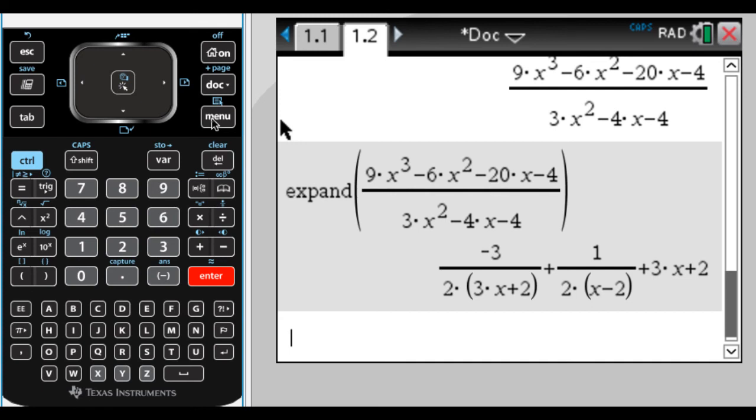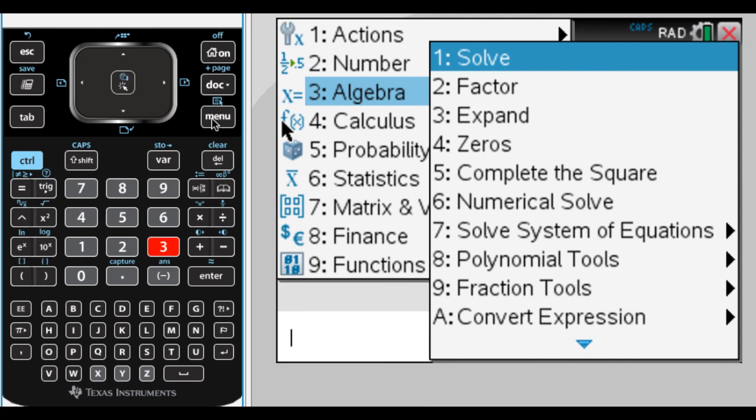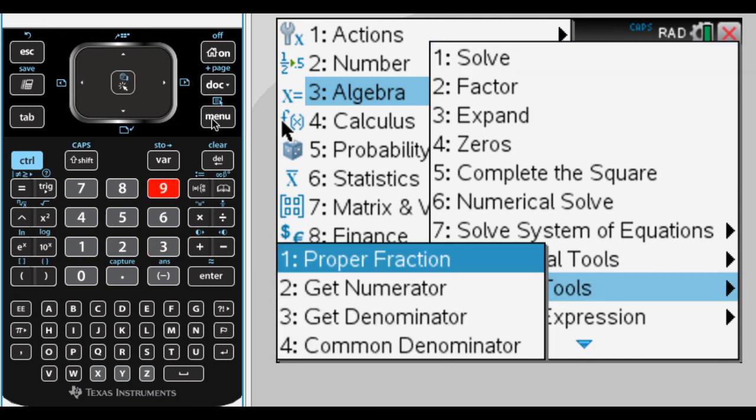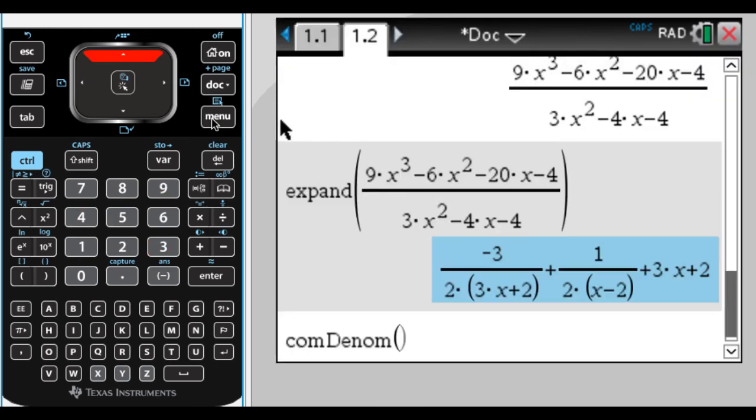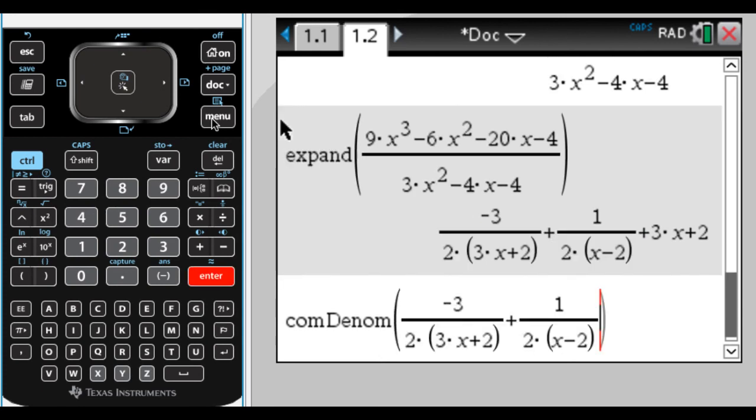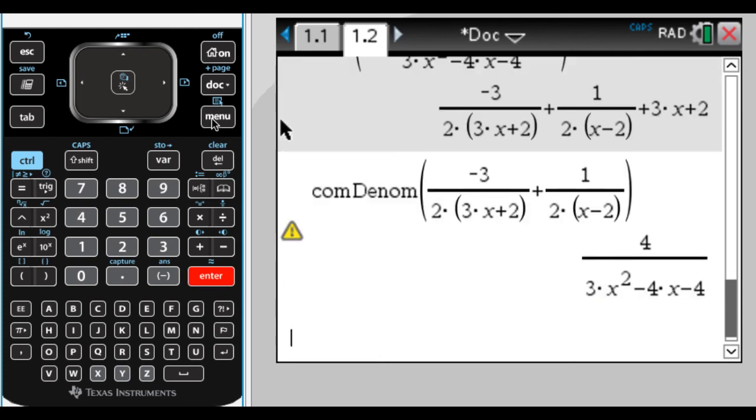So what I'm going to do now is menu three, option nine for fraction tools, and then option four for common denominator. Go up. I'm going to hold shift as I arrow through this. And as soon as the box is around it, I can press enter. It'll paste it down.